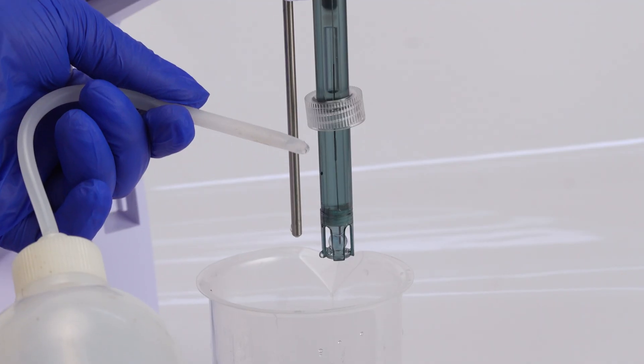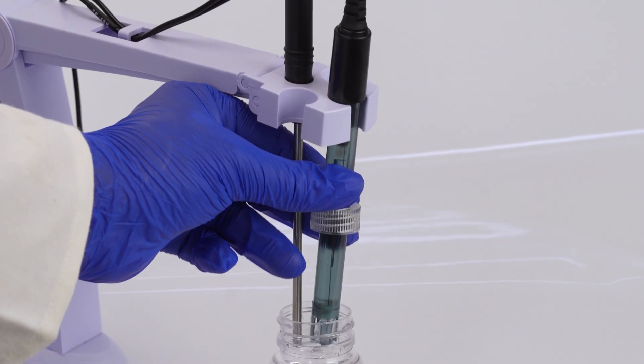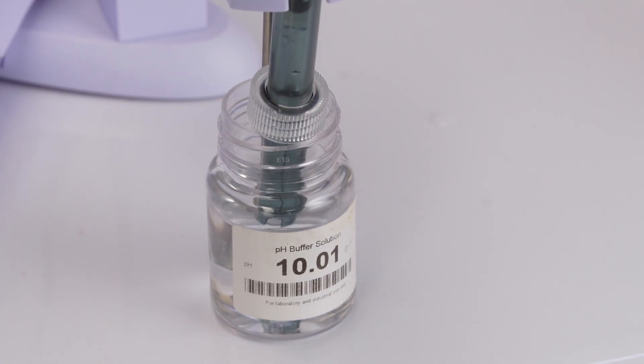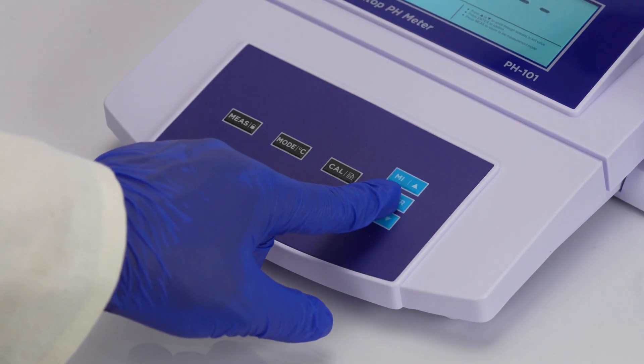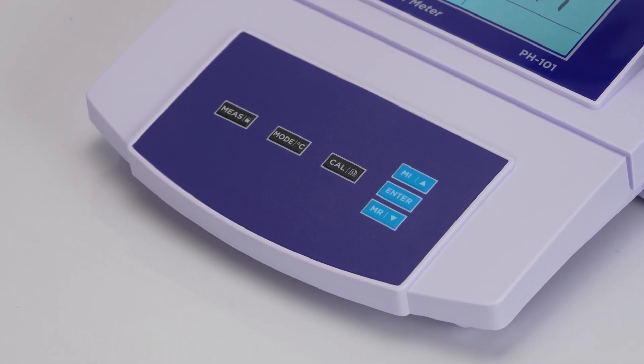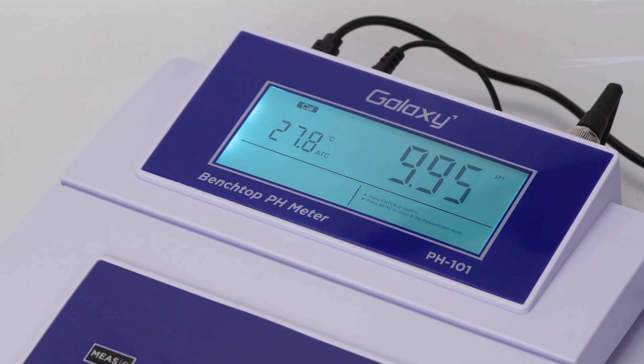For cal 3, rinse the electrode, immerse the electrode in the third buffer pH 10.01, and press enter again. The display will confirm calibration complete.